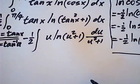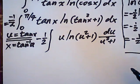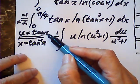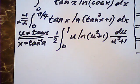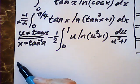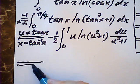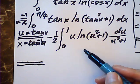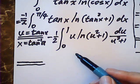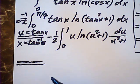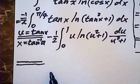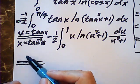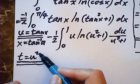Since x = arctan(u), dx = du / (u² + 1). When x = 0, u = 0; when x = π/4, u = 1. Now for this inner integral, let t = u² + 1.